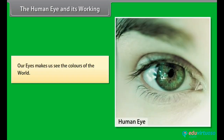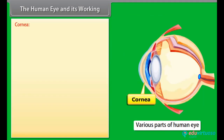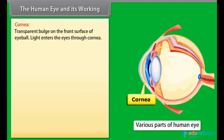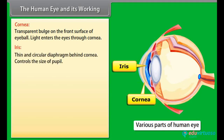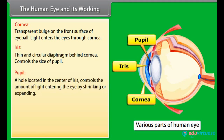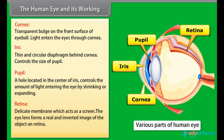The human eye and its working: Our eyes make us see the colors of the world. The human eye has a crystalline lens and works like a camera. The cornea is the transparent bulge on the front surface of the eyeball through which light enters. The iris is a thin circular diaphragm behind the cornea which controls the size of the pupil. The pupil is a hole in the center of the iris that appears black and controls the amount of light entering the eyes by shrinking or expanding. The retina is a delicate membrane which acts as a screen; the eye lens forms a real and inverted image of the object on the retina.